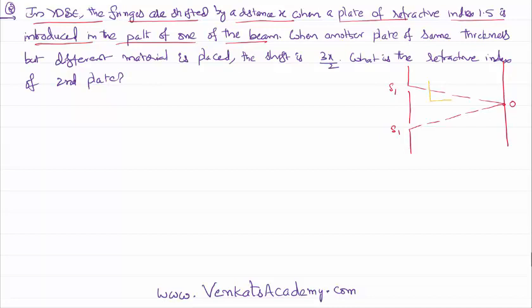In the path of one of the beams, a material is kept with a thickness t. The beam from S1 will no longer reach the point O. Rather, it will reach a point B because it has got a shift. How much shift does it get? Because it is traveling to a denser medium of refractive index n.